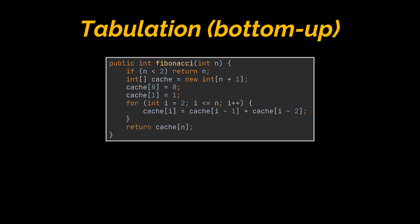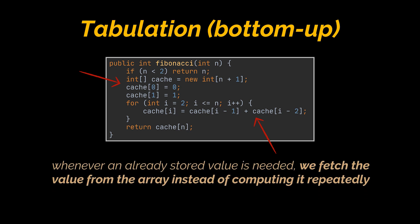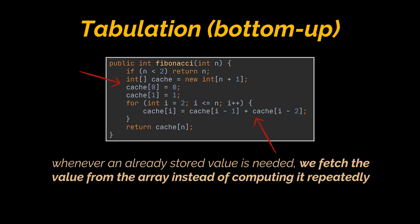Tabulation, or the bottom-up approach, is actually what we wrote a couple minutes ago. It is implemented with iteration and starts at the base cases, so our journey starts from the building blocks and continues by accumulating our intermediate answers all the way to the top — to our final answer. In our Fibonacci example, we stored the results of each method call in an array.